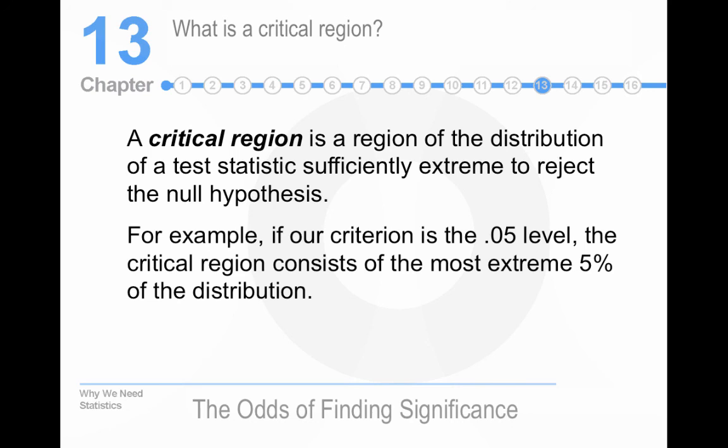We would call this the area of rejection. So, at 0.05 is extreme, 5% of the distribution. At 0.01, the extreme 1% of the distribution.